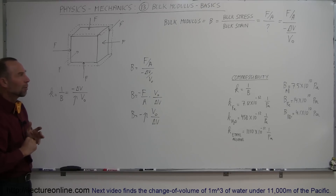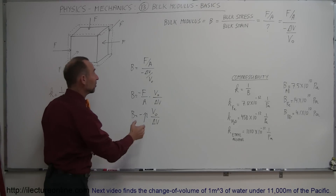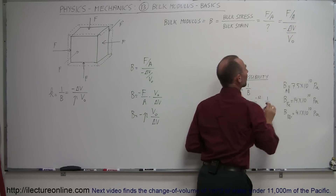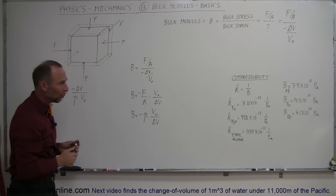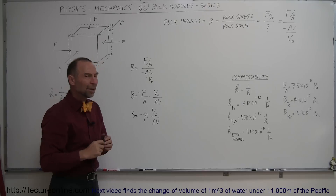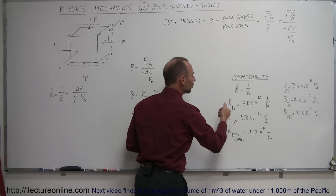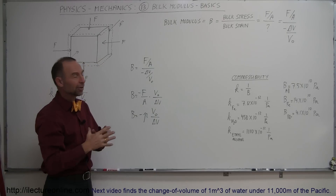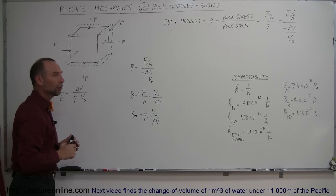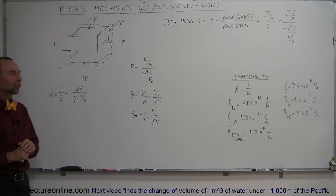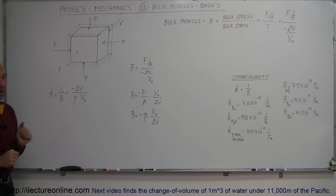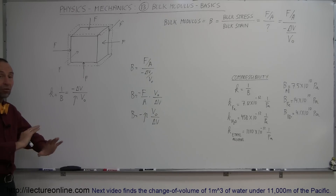At this point you should have a good feel for the bulk modulus — pressure divided by the change in volume over the original volume — meaning a certain applied pressure produces a certain fractional volume change. A bigger bulk modulus means it's more difficult to compress. Compressibility is the inverse of the bulk modulus: a bigger number means more compressible, a smaller number means less compressible. We'll now show examples of how to calculate volume changes when pressure is applied to a material.